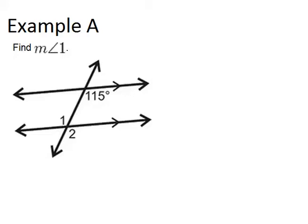In example A, it says find the measure of angle 1, which is right here. One thing I notice in this picture is that the lines are marked as being parallel. This will mean that any alternate interior angles have to be congruent, because if lines are parallel, then alternate interior angles are congruent.